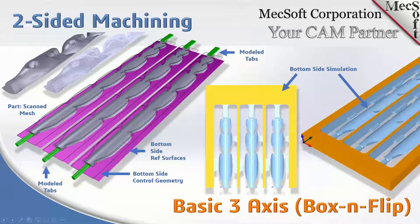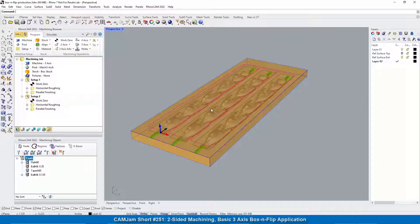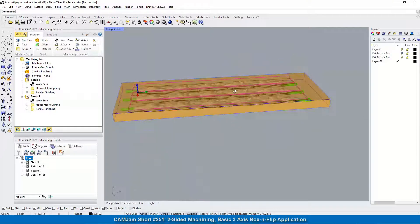Here's the bottom side of this particular part. You can see the rectangular tabs extending underneath the part just enough to hold it to the stock. The bottom side is simulated here with the tabs, and you can see that the part is completely separated everywhere except for the tabbed areas. You basically do side two, take it off, and you'll have to manually cut these tabs off and clean up the ends.